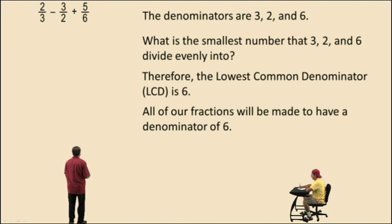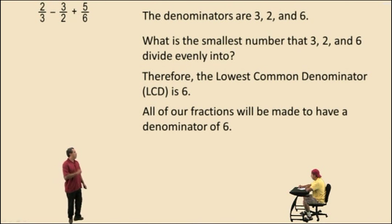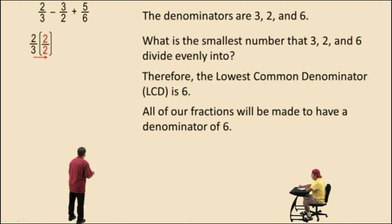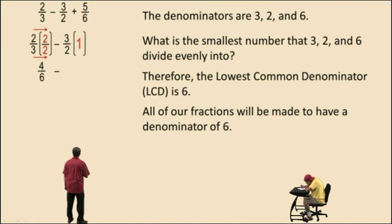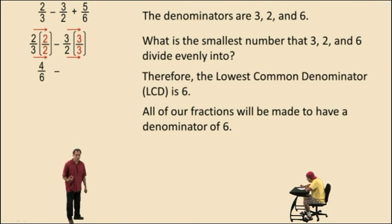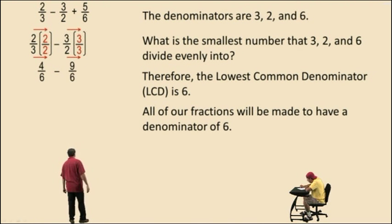So all of our fractions will be made to have a denominator of 6. How do we do that? We multiply each fraction by 1, but 1 is written in a special form. So here we have 2 thirds — we're going to multiply by 1, written in the form of 2 over 2, and multiply across the top and bottom, because that makes our denominator on the bottom 6. And so we get 4 sixths. Now, 3 halves — again, we're going to multiply by 1, written in the form 3 over 3, because 2 times 3 is 6. But remember, if you multiply the bottom by 3, you have to multiply the top by 3, and that gives you 9 sixths.